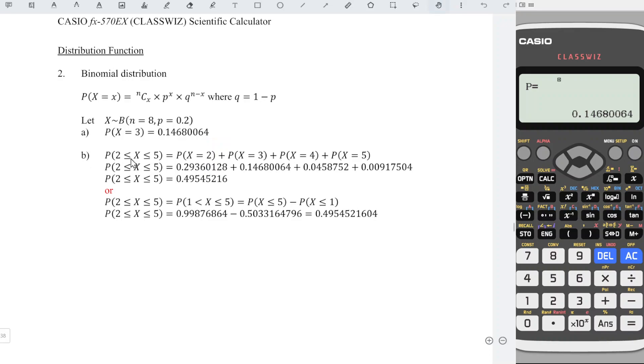For an interval, we have three methods here. First, press menu, distribution, binomial pd, 4, list.